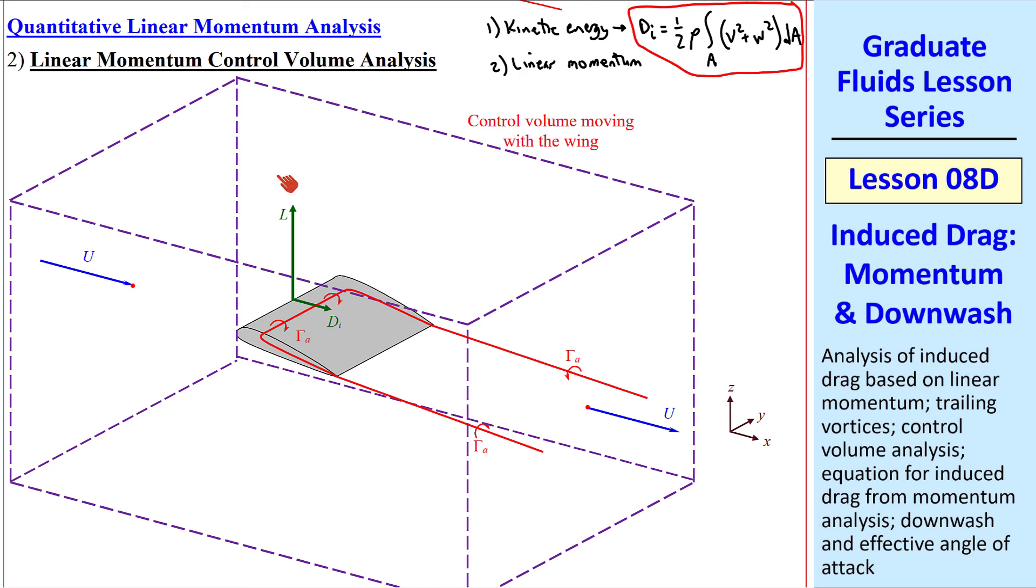Our control volume is again a box around the wing, but this control volume is moving with the wing, so we have flow coming in the left face and flow going out the right face. So unlike the previous lesson, this problem is steady. If it helps you visualize it better, think of this wing in a wind tunnel, the wing being stationary, and we're watching flow come in from the left and go out the right past the wing. That's the same as this control volume moving with the wing, if this were an actual flying wing. But now the problem is steady.